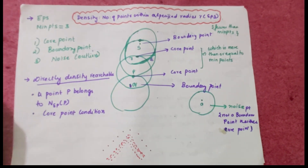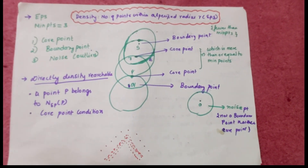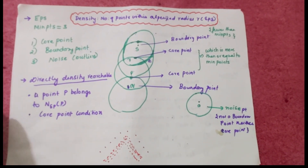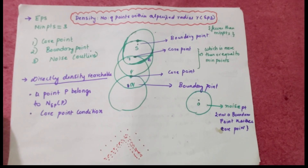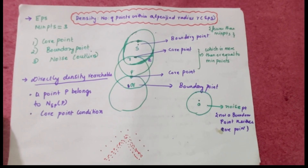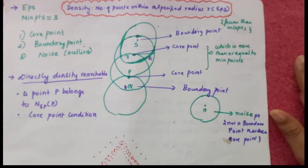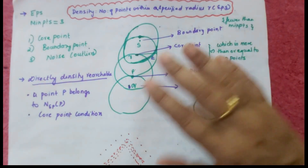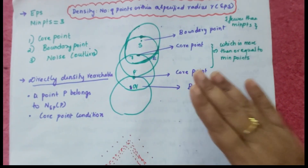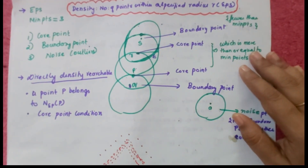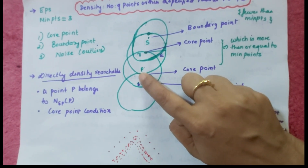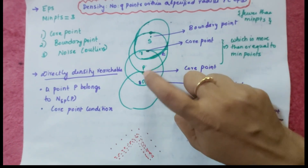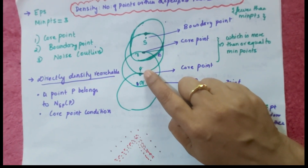When going into DBSCAN in detail, some key concepts must be remembered: core point, boundary point, and noise — which are outliers. Given epsilon and minimum points equals three, let us check each case. If we take P as center and draw a circle, there are one, two, three minimum points inside — so P is classified as a core point.